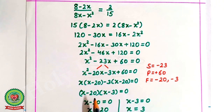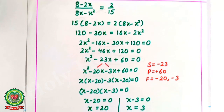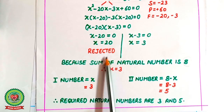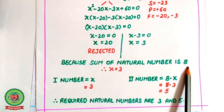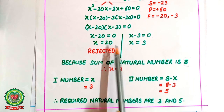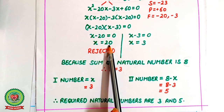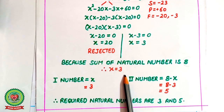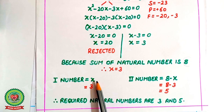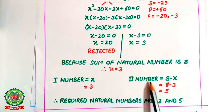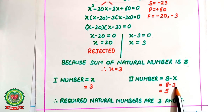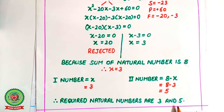Either x minus 20 equals 0 or x minus 3 equals 0, giving x equals 20 or x equals 3. x equals 20 is rejected because the sum of the natural numbers is 8 and 20 is greater than 8. Therefore x equals 3. The first number is 3 and the second number is 8 minus 3 equals 5. So the required natural numbers are 3 and 5.